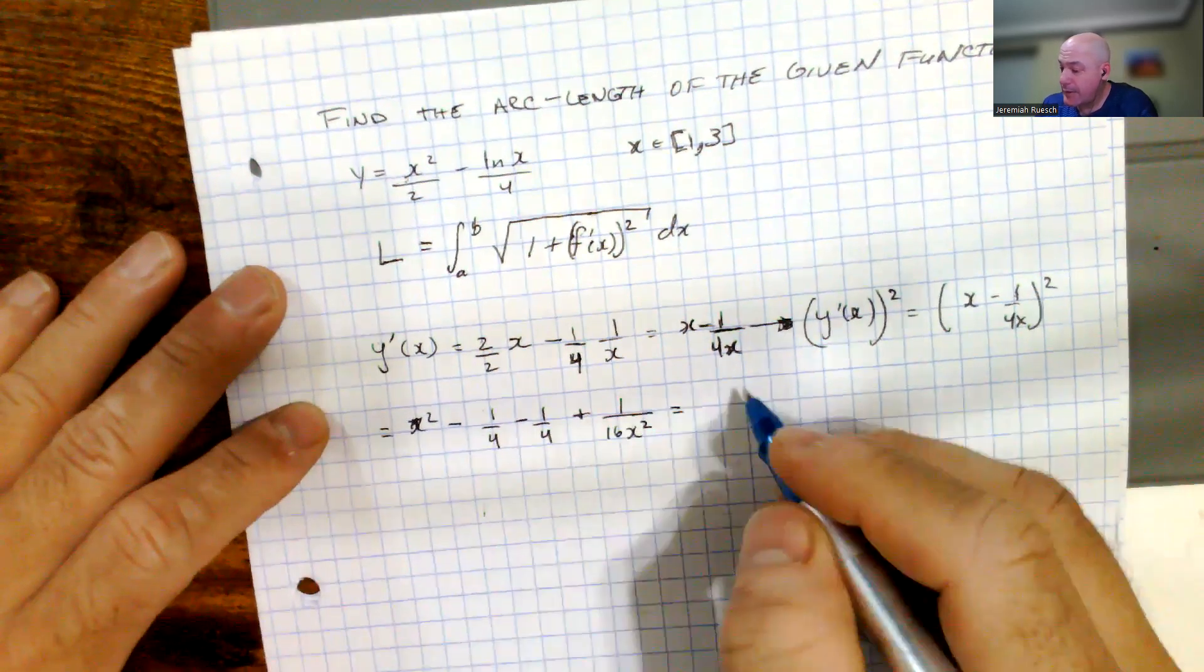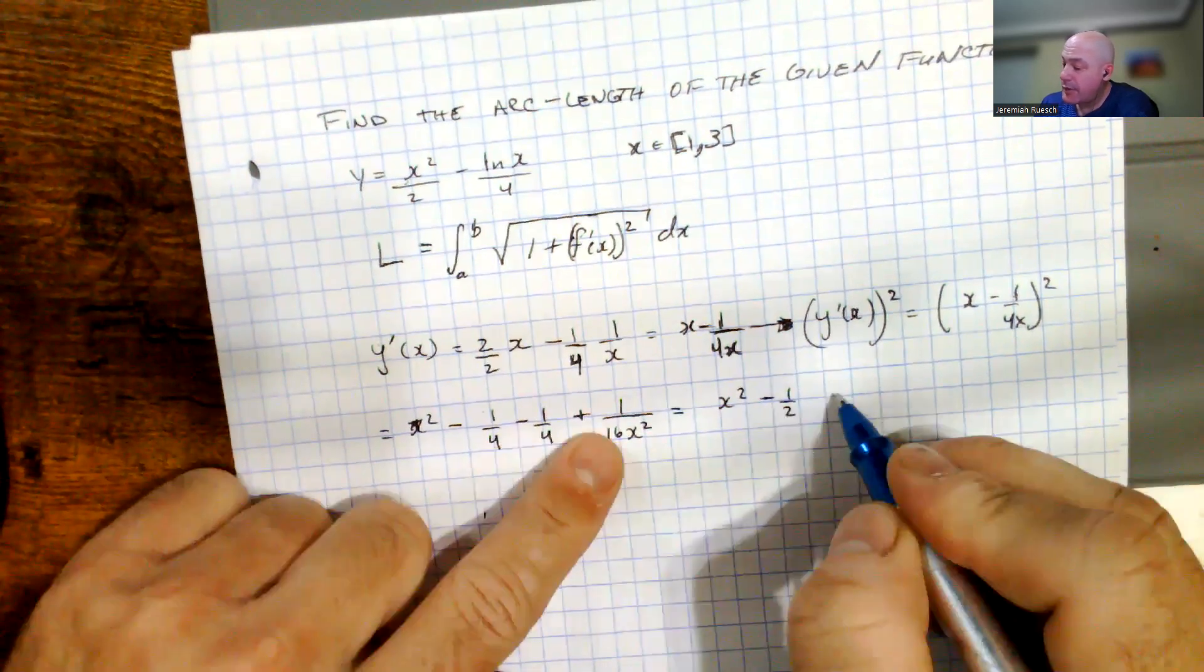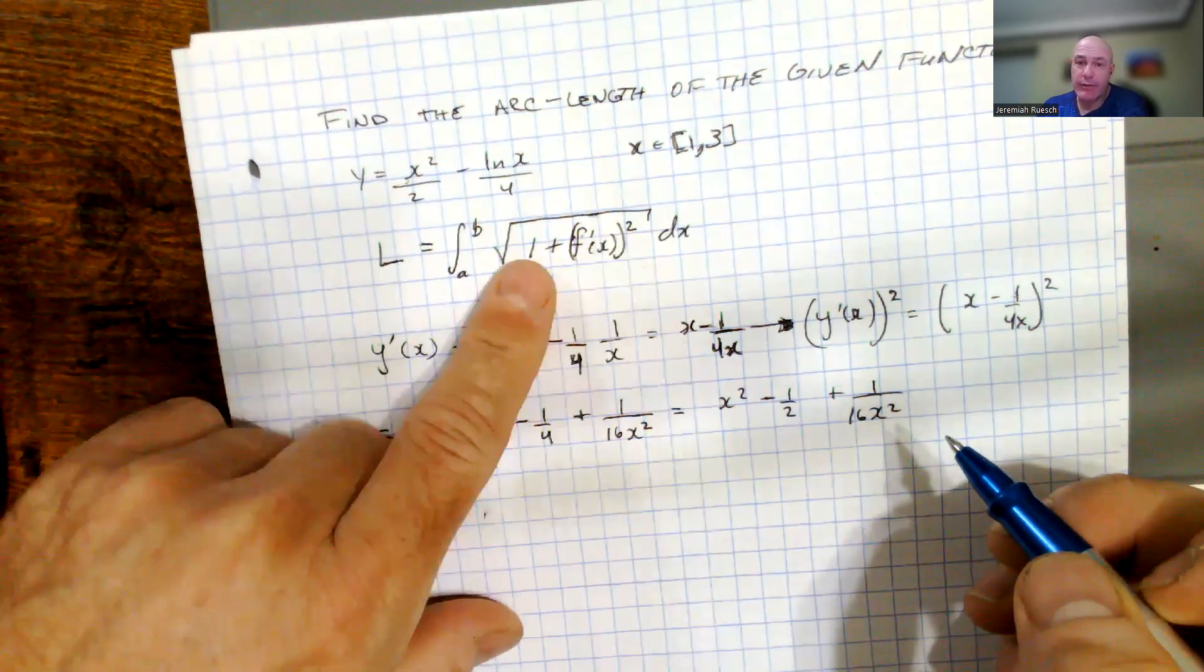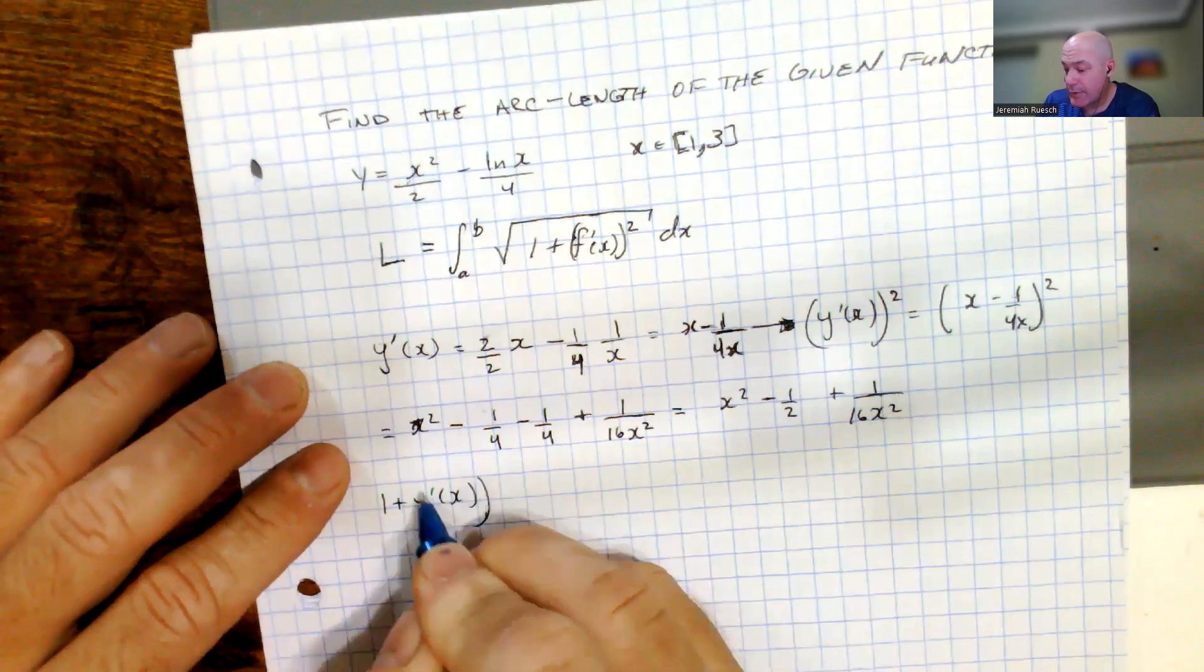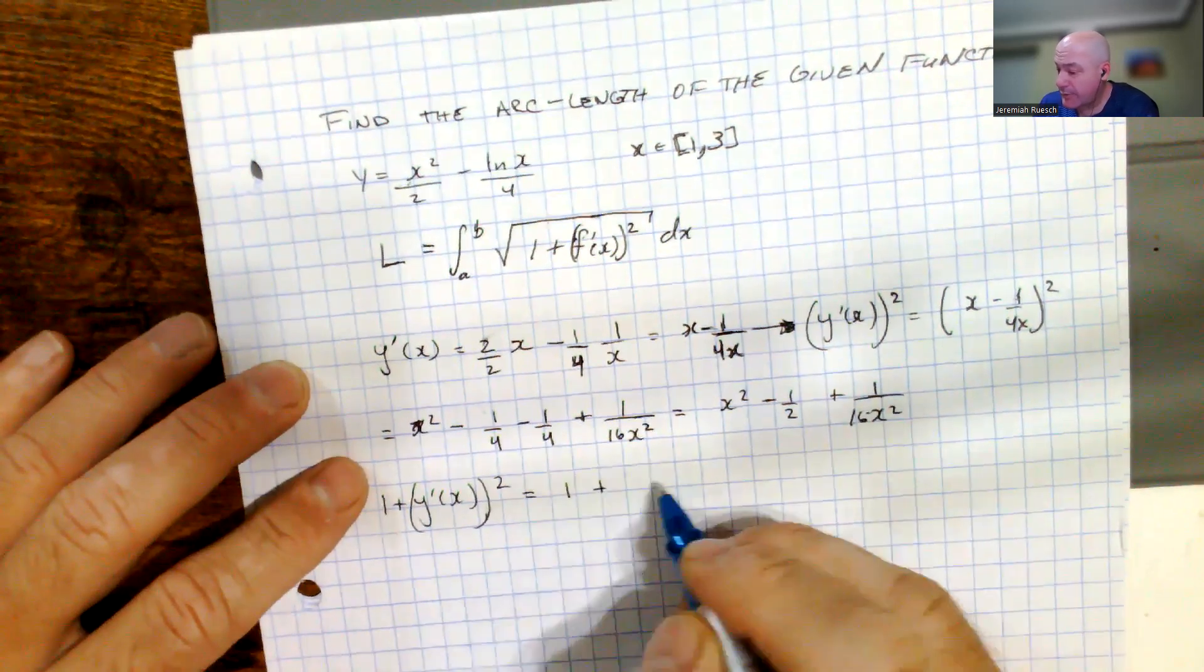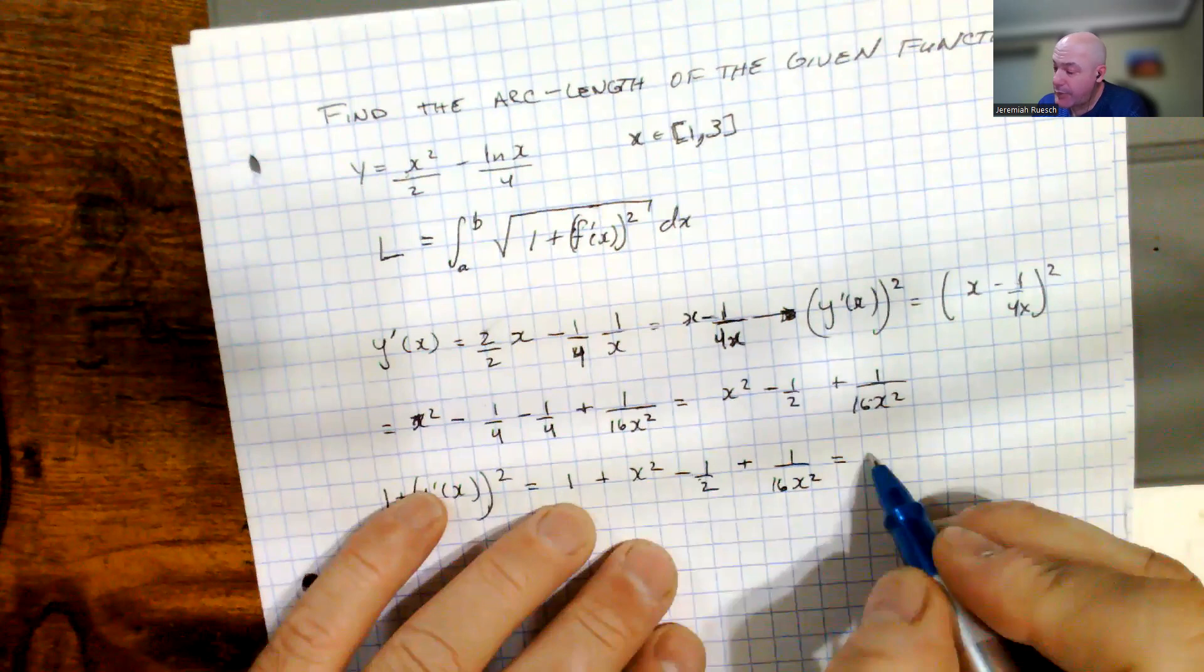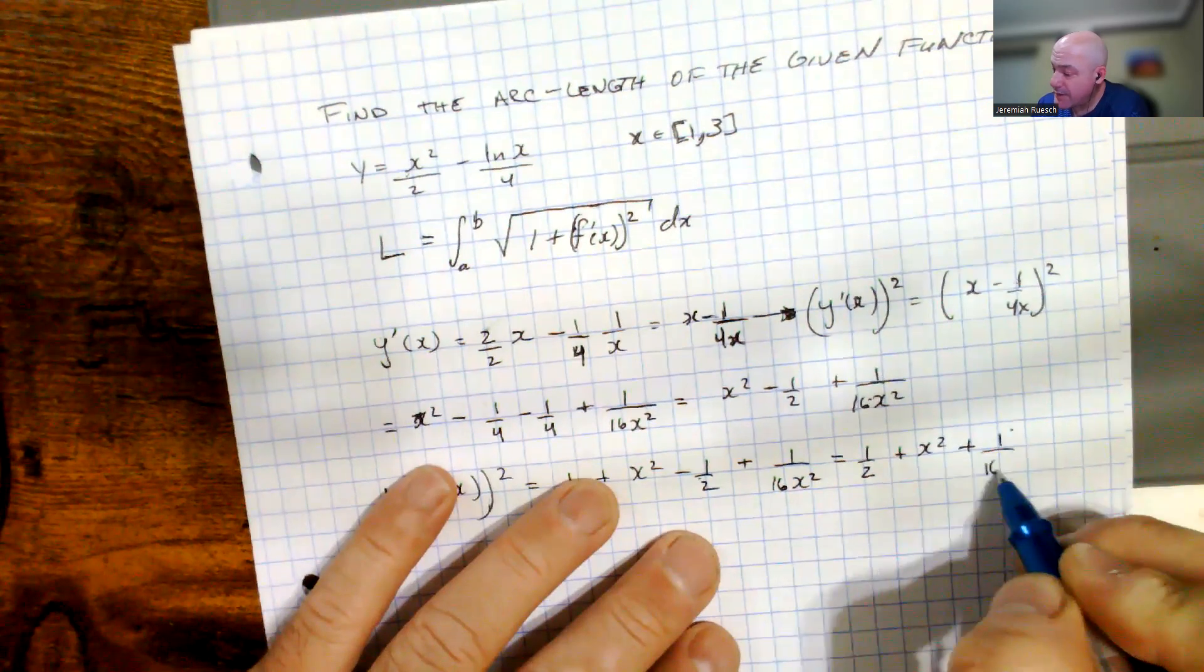Simplifying that a little bit more, we have x squared minus and a minus make that a half, minus 1 half, plus 1 over 16x squared. And then we still have, so that's this term all squared now, and so now we have to worry about the plus 1. So now we have 1 plus y prime of x squared. We know what y prime of x squared is, that's this whole wonderful thing over here, so we have 1 plus x squared minus 1 half plus 1 over 16x squared. So the 1 minus the 1 half gives us 1 half plus x squared plus 1 over 16x squared.